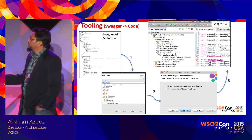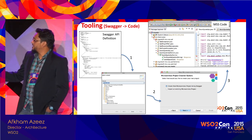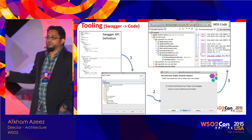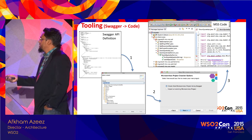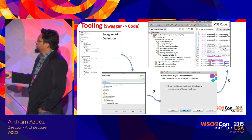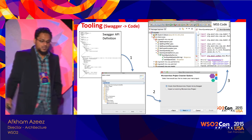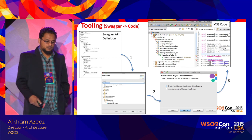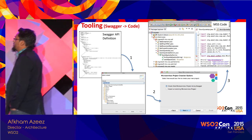For tooling, you can start with your Swagger definition and then use the Eclipse tooling. Download it — the instructions are in the pack on how to install this. You create your project and it will create the relevant skeleton classes as well as the project structure with the relevant annotations and resource methods.